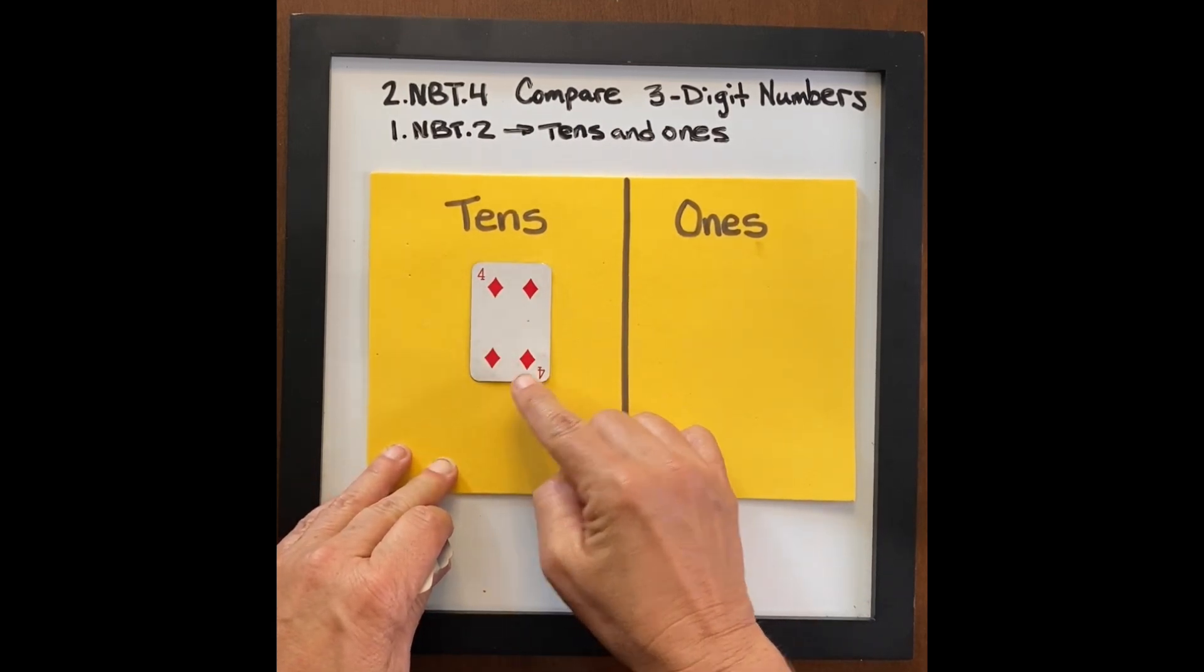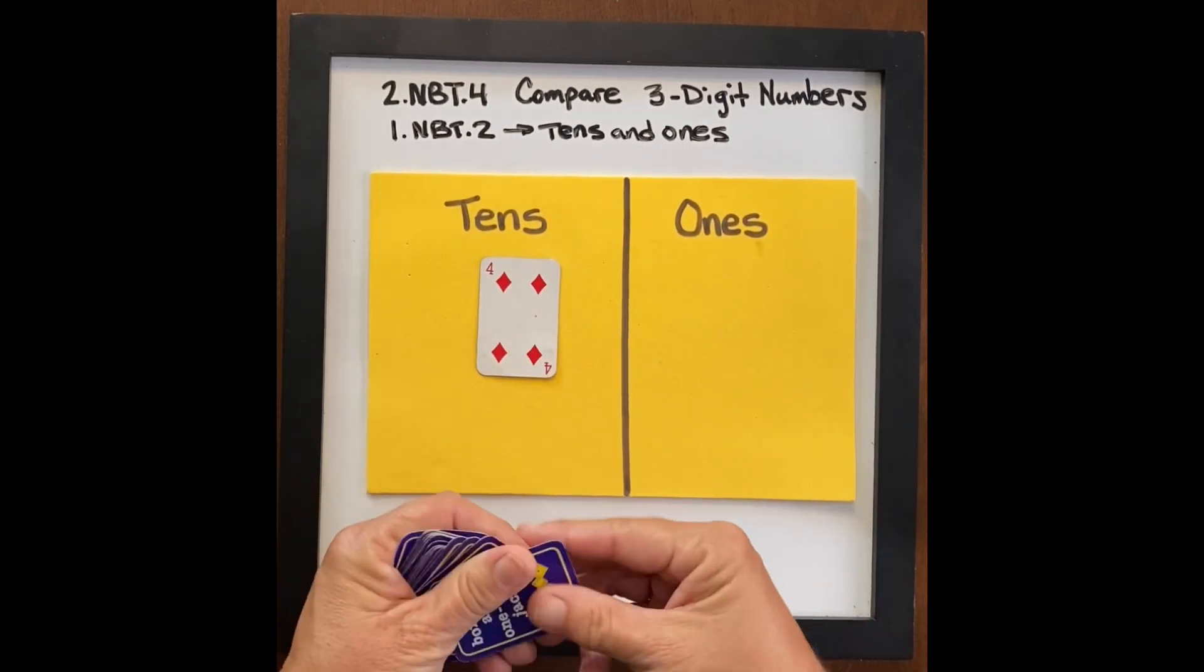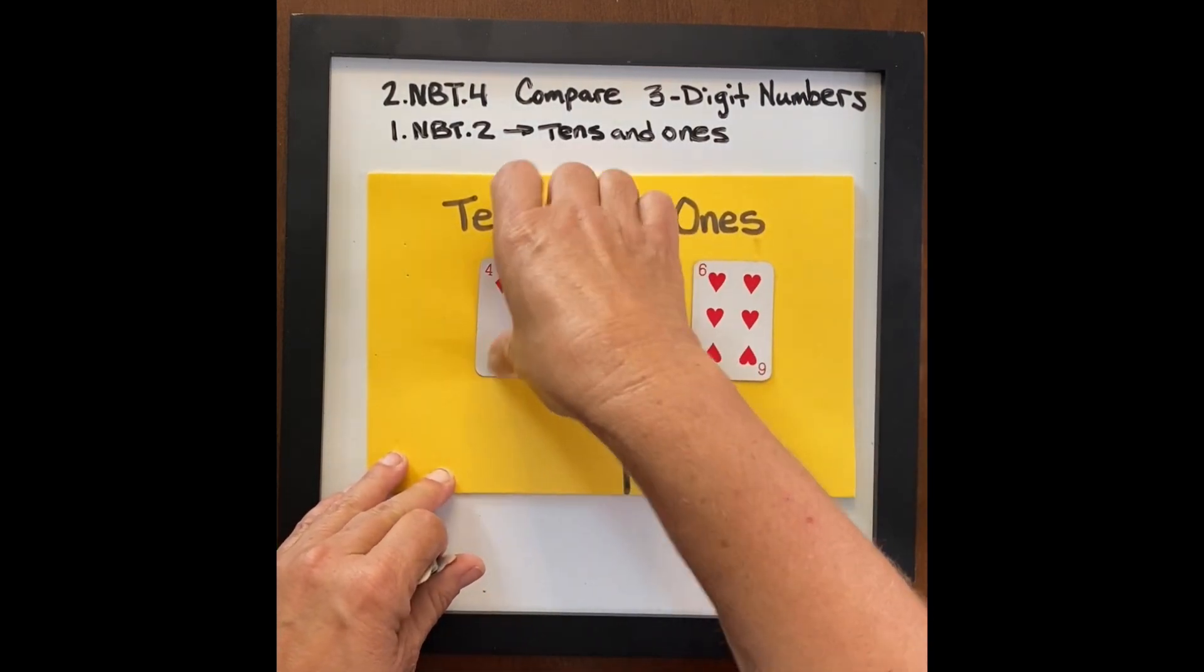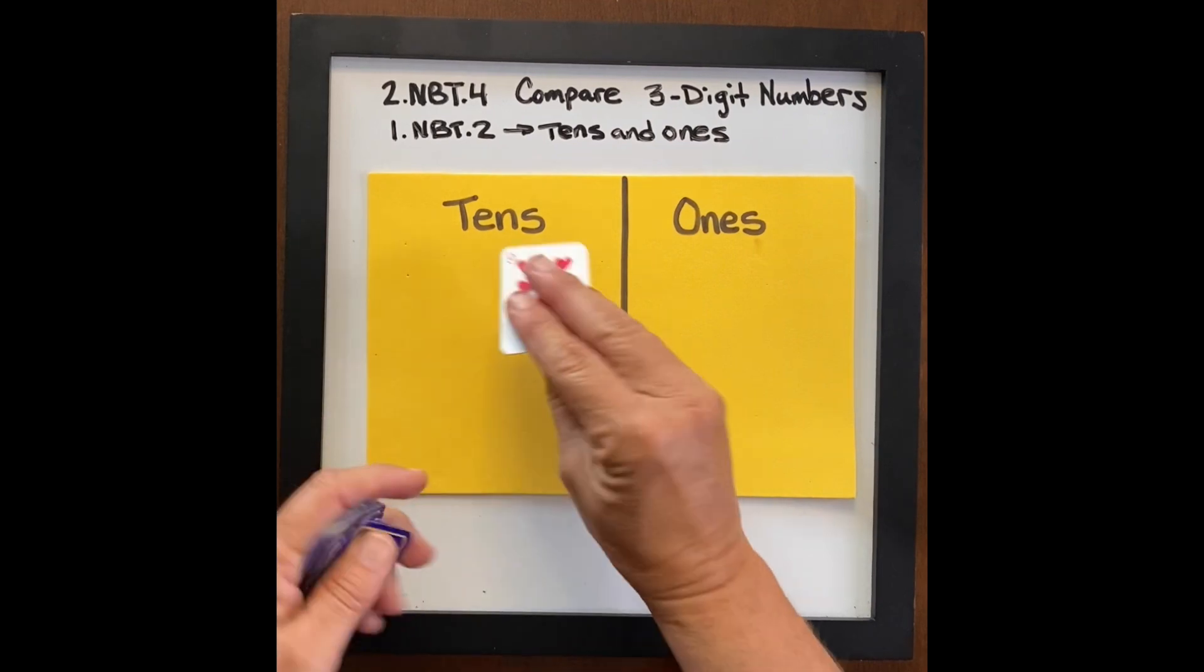Here I'm using playing cards. Four tens, four tens is forty. Four tens, six ones. Four ten six, forty six. That's the language that's being used in first grade.